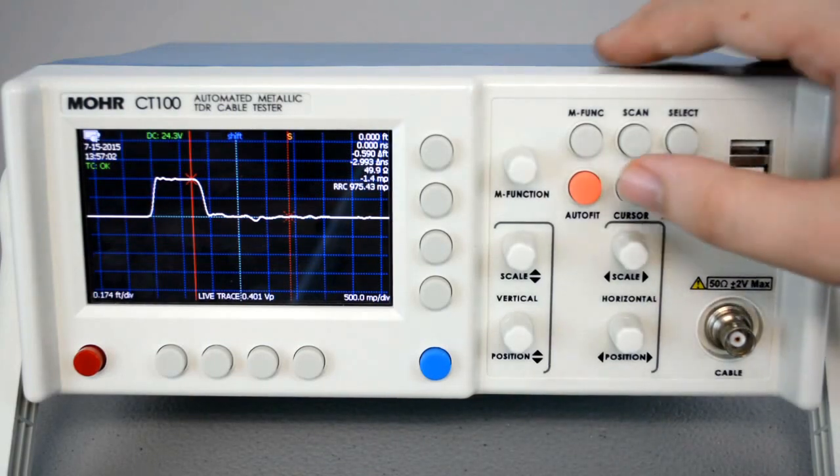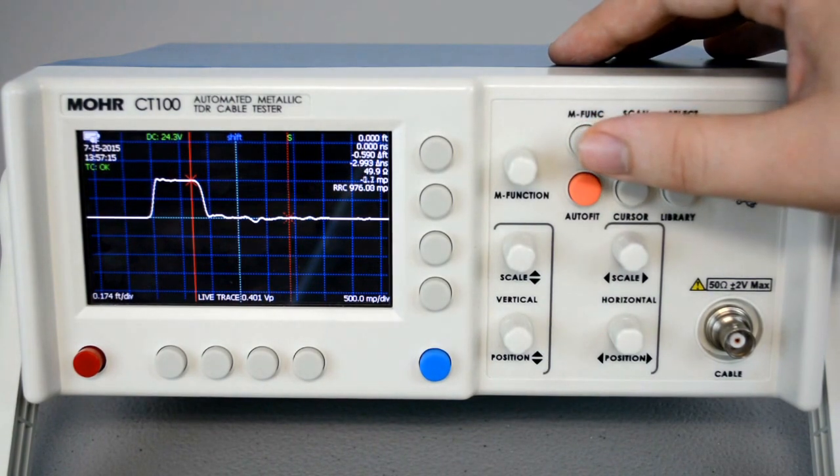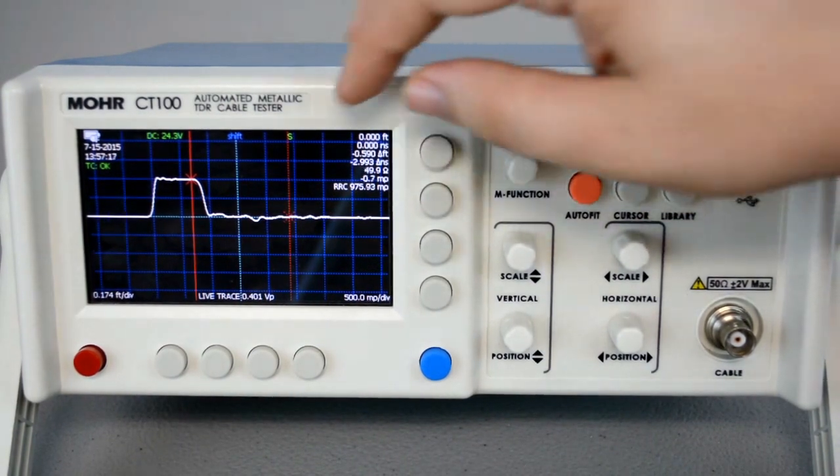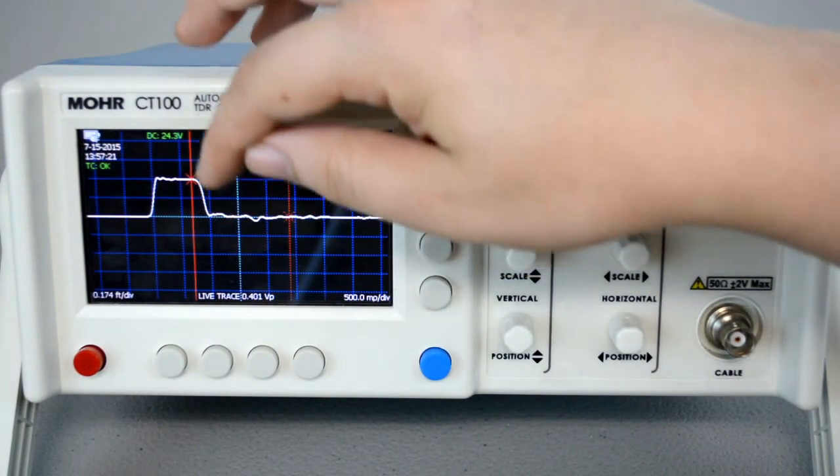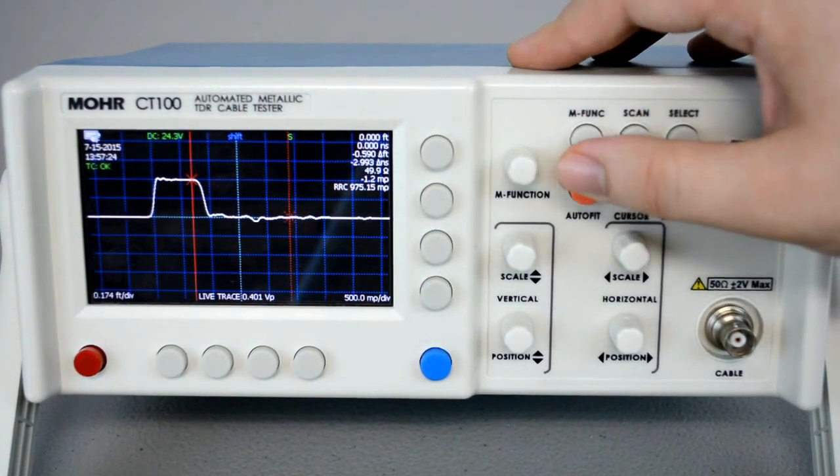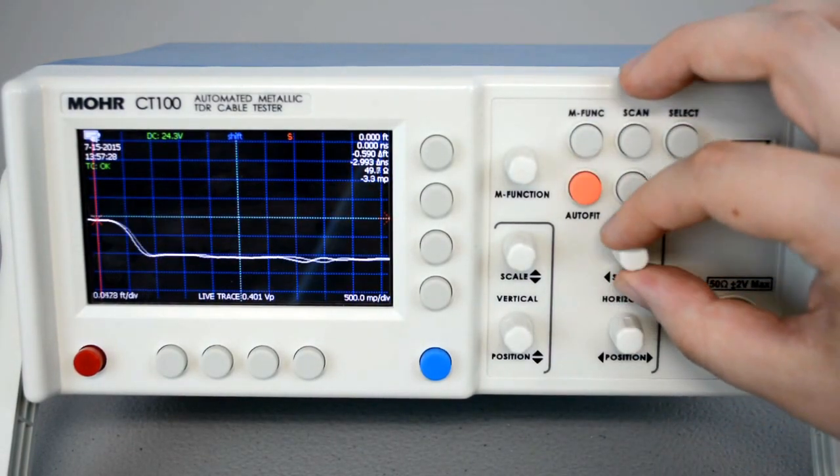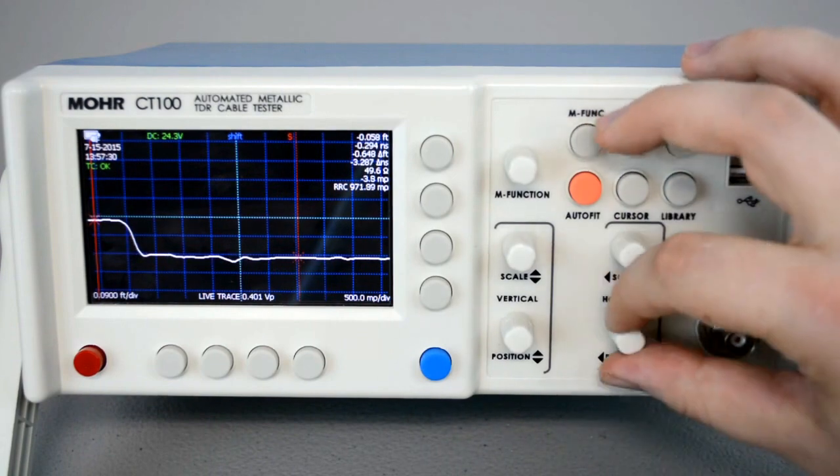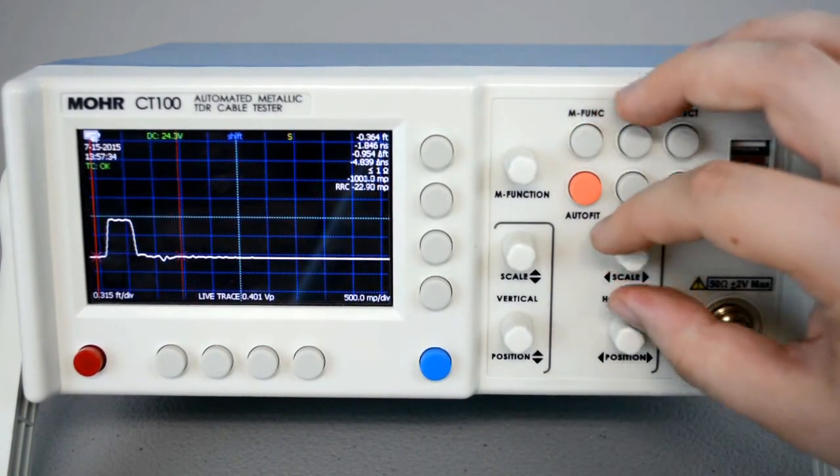Finally I want to talk about AutoFit. AutoFit is a very useful button and displays the entire trace on the screen when you press it. So for example right now it will display the trace right here. This little bump right there. If I press the AutoFit button, there and you can see, scale the horizontal position back, and we're right back to where we were.